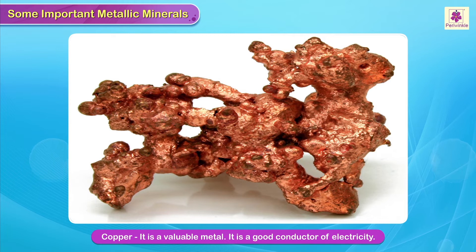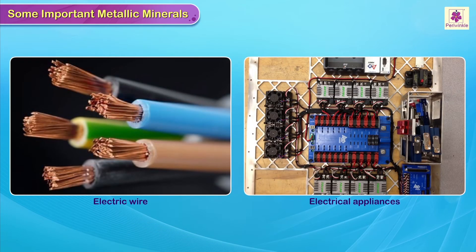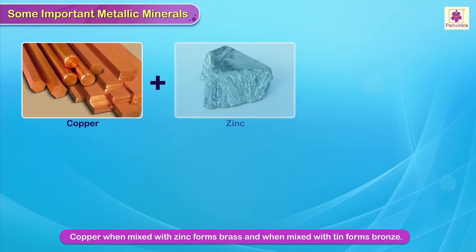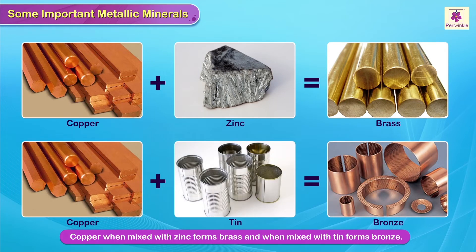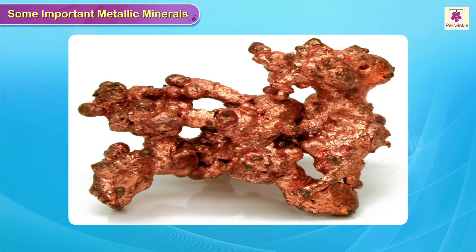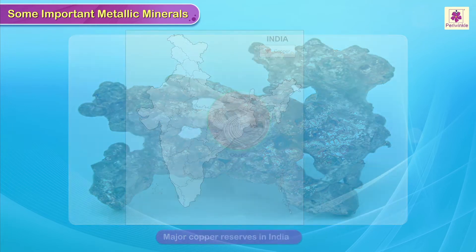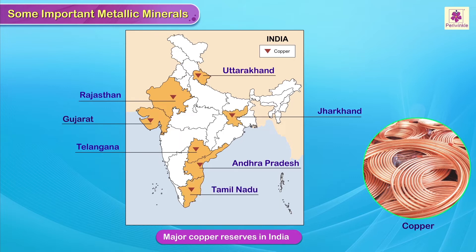Copper is a valuable metal as it is a good conductor of electricity. It is largely used in making electric wires and electrical appliances. Copper when mixed with zinc forms brass, and when mixed with tin forms bronze. It is also used for making household utensils. It occurs in small quantities in India and is found in Rajasthan, Andhra Pradesh, Telangana, Uttarakhand, Gujarat, Jharkhand and Tamil Nadu.